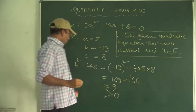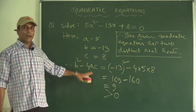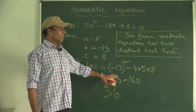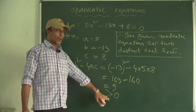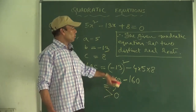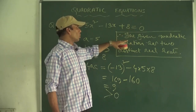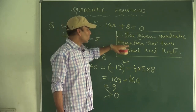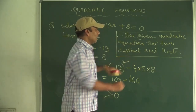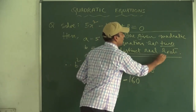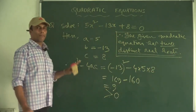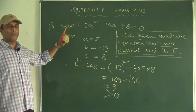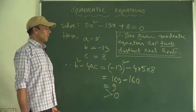Since B² - 4AC's value is greater than 0, according to the first condition — if B² - 4AC is greater than 0, then the given equation has two distinct real roots — we have confirmed that this equation has two distinct real roots. Now by different methods we will solve this quadratic equation.